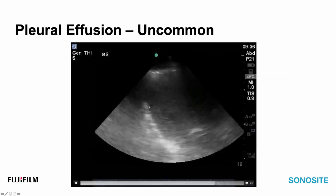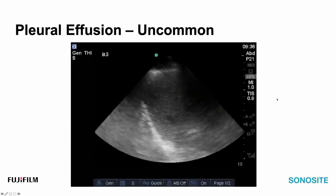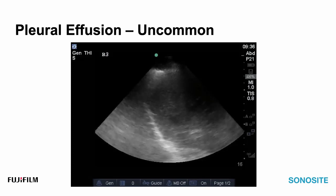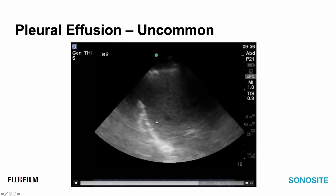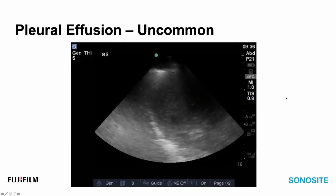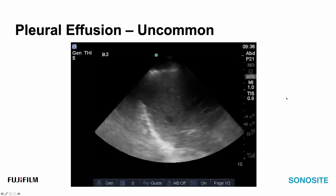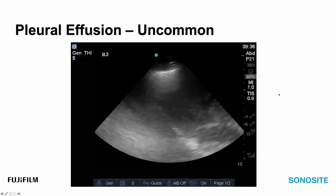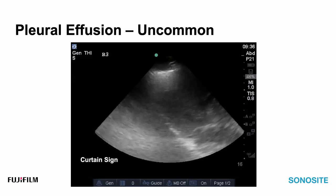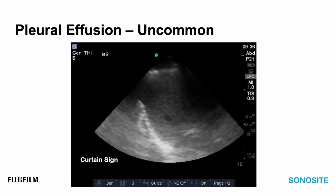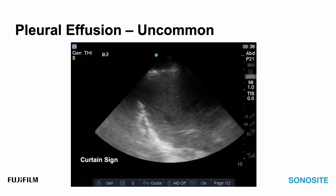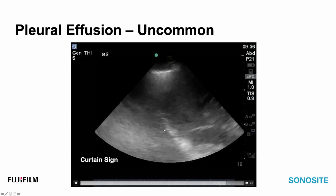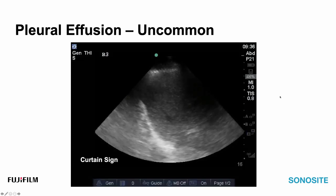One observation that has been published is that pleural effusion is quite uncommon in these patients, for reasons that cannot be fully explained. When you scan the costophrenic angle regions — here's the right side with the diaphragm, liver, and lung — the most likely finding you will experience is the curtain sign. The curtain sign is the normal appearance of an aerated lung in these regions, where during tidal ventilation some element of the lung enters the field of view, obscuring the diaphragm and sometimes the entire solid organ.